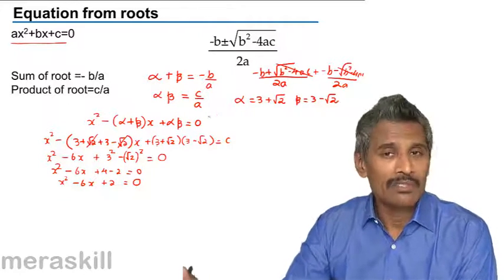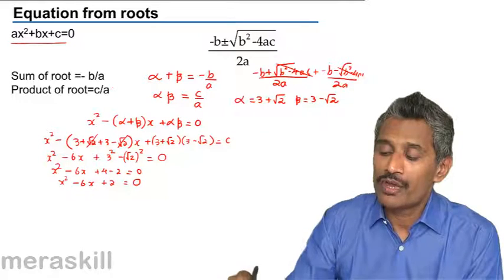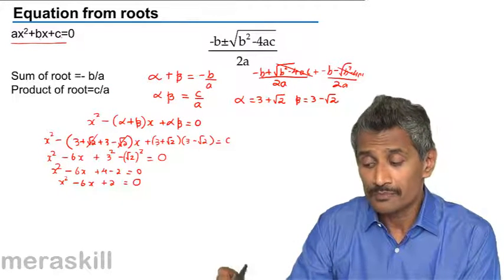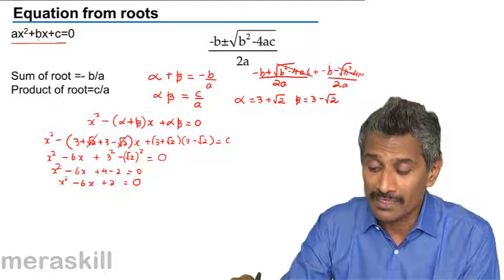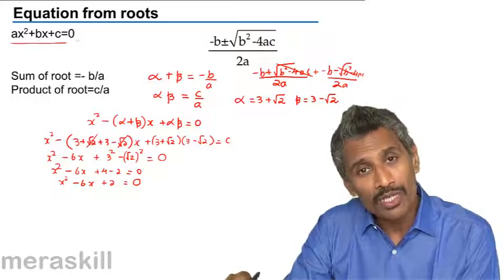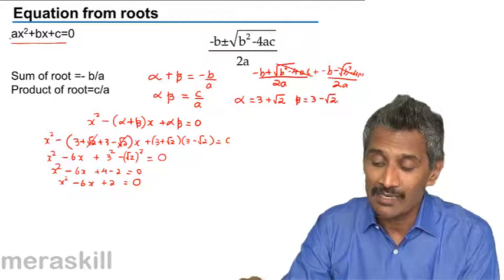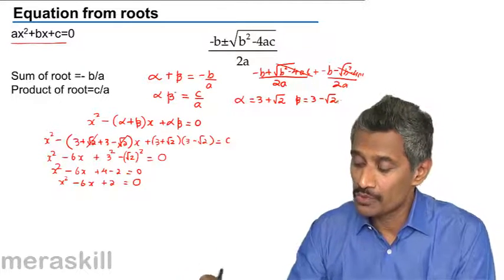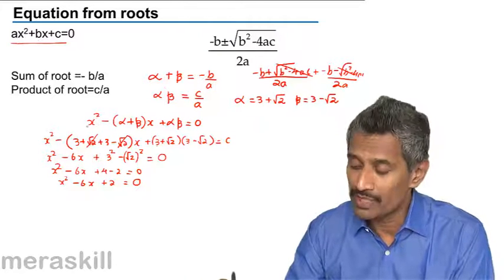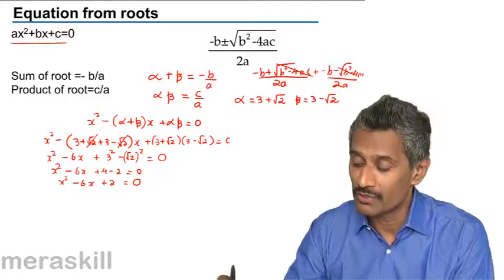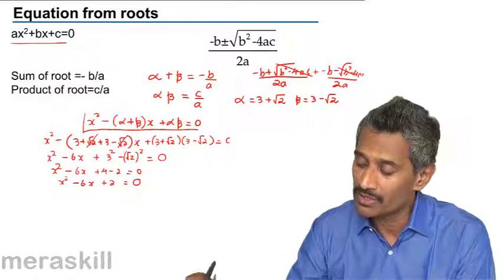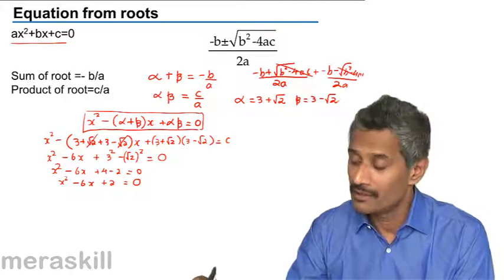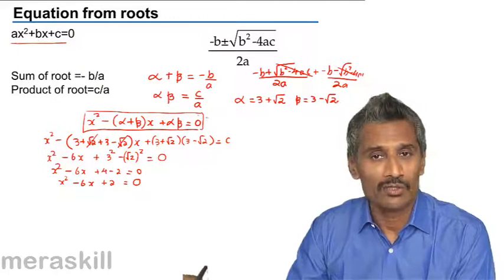To sum it up in a nutshell: whenever you have a quadratic equation ax squared plus bx plus c equals 0, the sum of its roots will always be minus b by a, and the product of the roots will be c upon a. From the roots we can find the equation, which is x squared minus (sum of roots) times x plus (product of roots) equals 0.